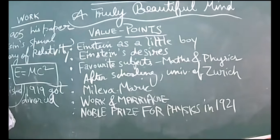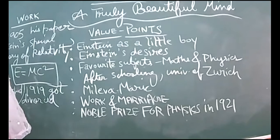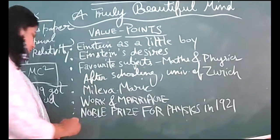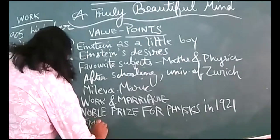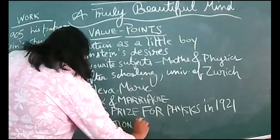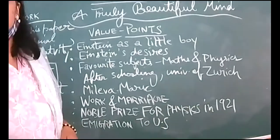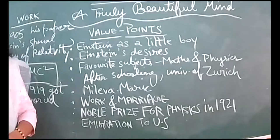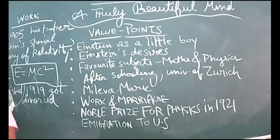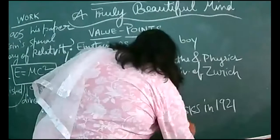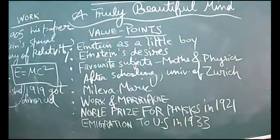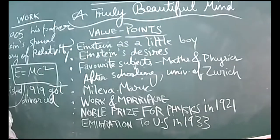Next point is immigration to US—immigration to United States. Einstein immigrated to US in 1933. In which year? In 1933 he got immigration over there. So now we will see a new turn in his life. When in 1933 he moved to US, what happened at that time? Nazi invasion.